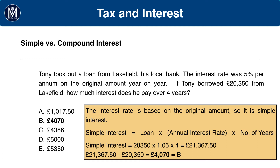In questions, they won't tend to spell out the fact that it's simple interest explicitly. Instead, you'll have to look at phrases such as 'original amount' and infer that it's simple interest. The calculation we do is: loan × interest rate × number of years. So we do £20,350 × 1.05 × 4 to get our new value, then subtract the original amount borrowed of £20,350 to get our answer of £4,070. The answer is B, £4,070.